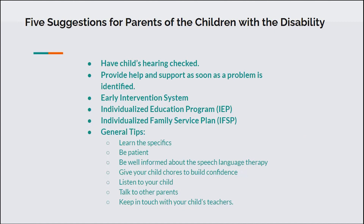Listen to your child — don't rush to fill gaps or make corrections, and conversely don't force your child to speak. Be aware of the other ways in which communication takes place. Talk to other parents whose children have a similar speech or language impairment, as parents can share practical advice and emotional support. Visit the parent-to-parent USA program and use the interactive map to find a parent nearby. Keep in touch with your child's teachers, offer support, demonstrate any assistive technology your child uses, and find out how you can augment your child's school learning at home.